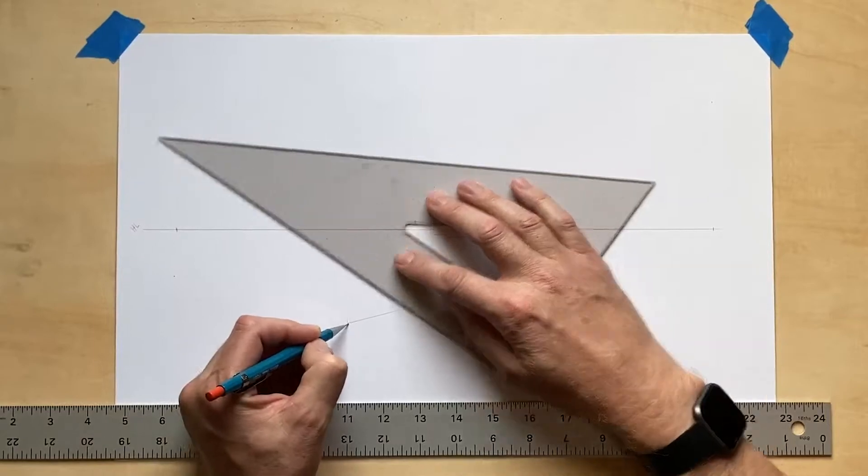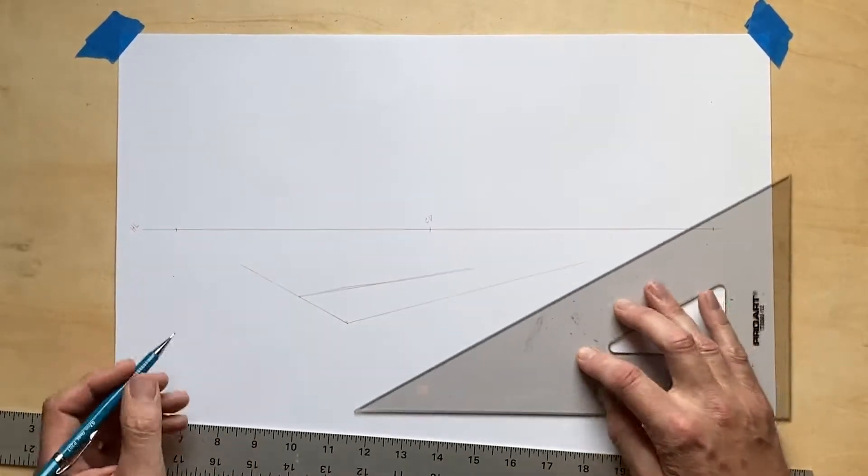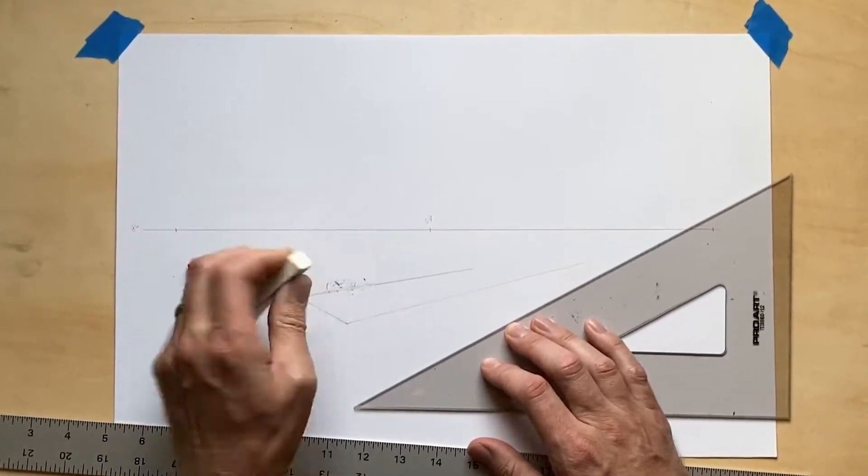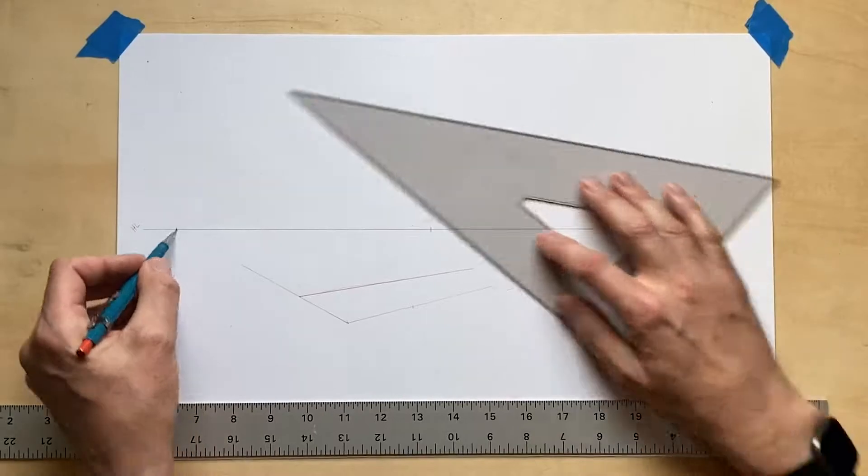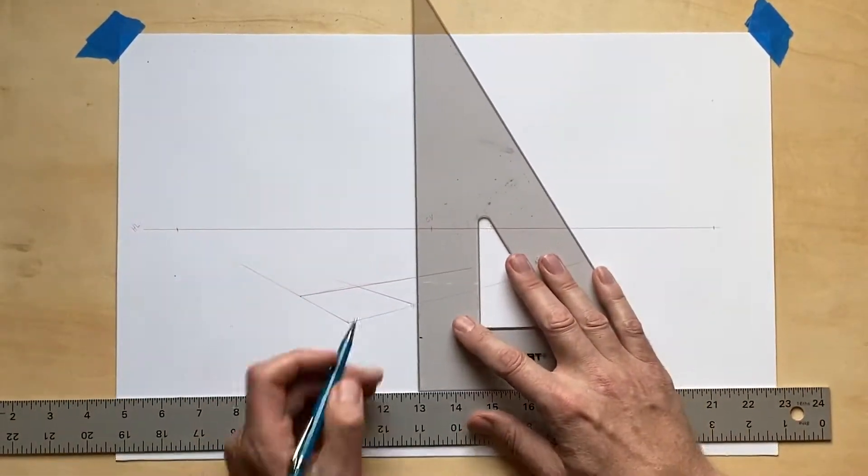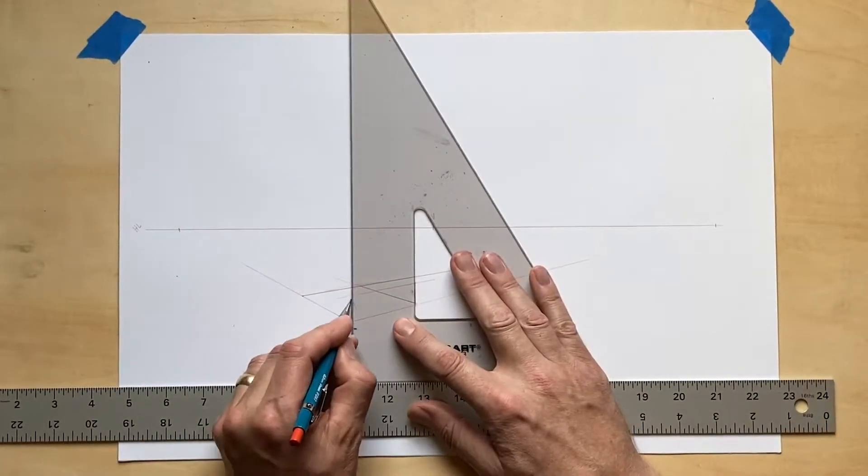Once we have even a basic understanding of perspective, we can begin to create much more complex shapes and spaces through two methods. The first is addition.